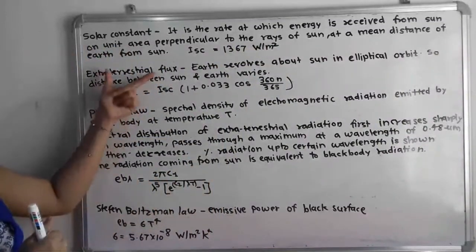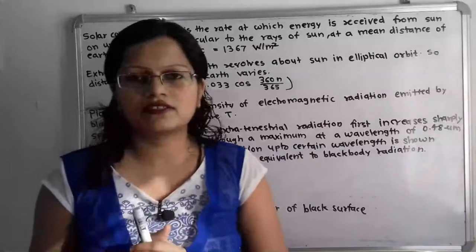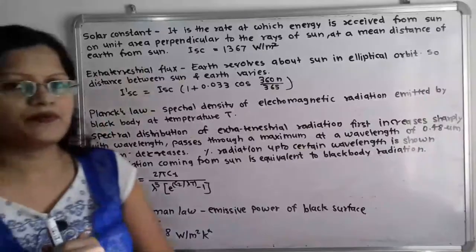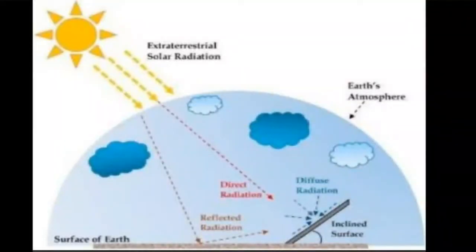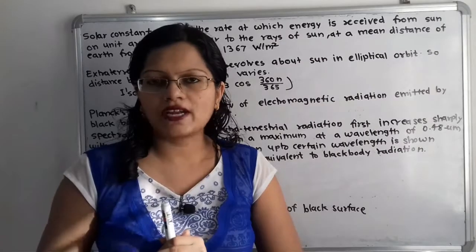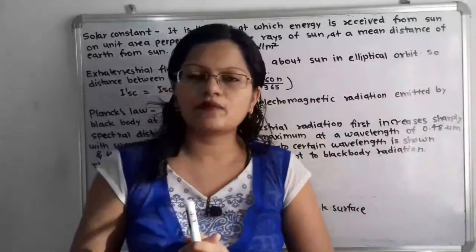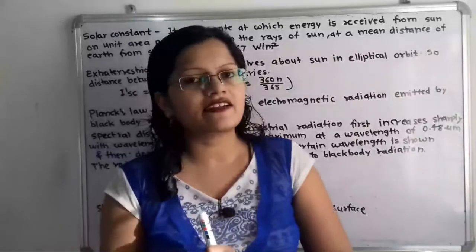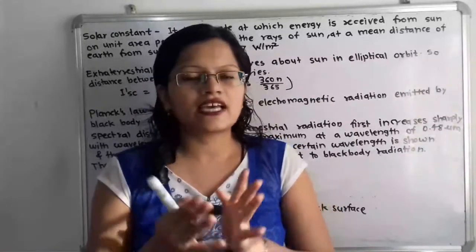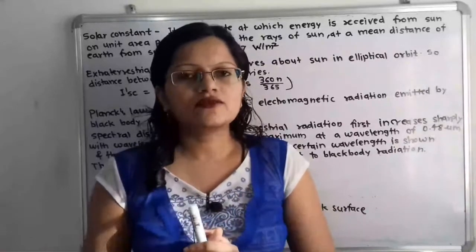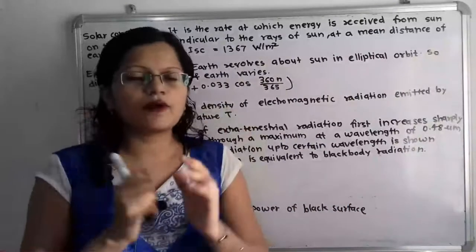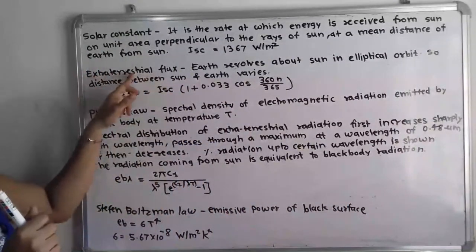Now we will move to the next term: extraterrestrial flux. The term extraterrestrial is used for the intensity of the sun above the earth's atmosphere. When the sun's rays enter the atmosphere, there is absorption as well as scattering of radiation due to different gases and water vapors. So we measure the sun's radiation above the earth's atmosphere, and it is called extraterrestrial flux.